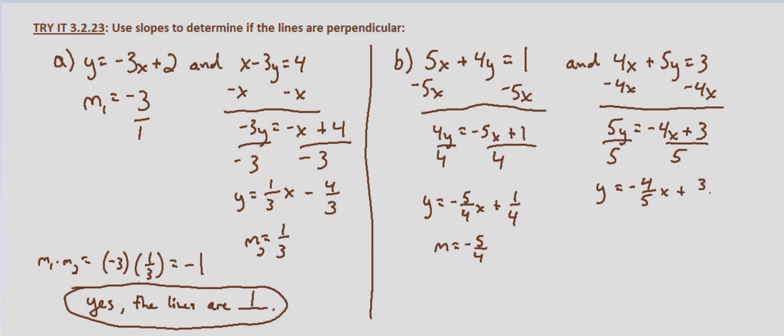We should notice right off the bat that these lines can't be perpendicular because both slopes are negative and they need to be opposite signs in order for the lines to be perpendicular. If we call this m1 and this m2, m1 times m2 equals negative 5 fourths times negative 4 fifths and that equals positive 1. Because the product is not negative 1 and they're both negative, they're not opposite reciprocals, so no.